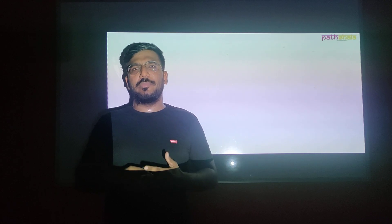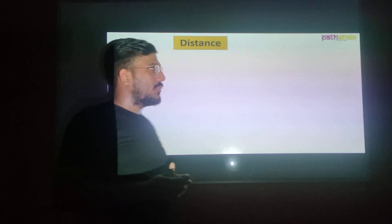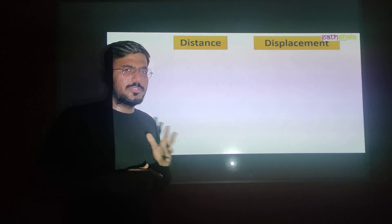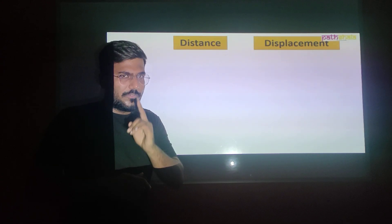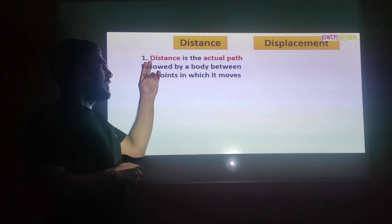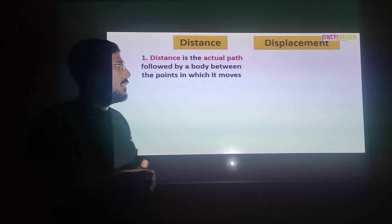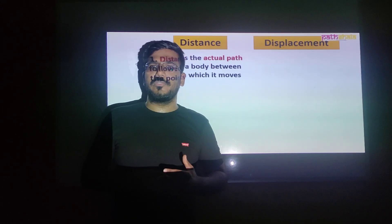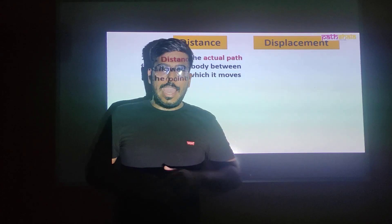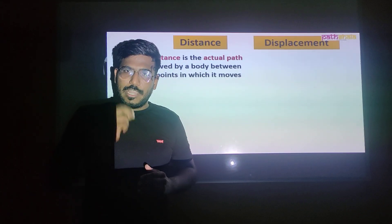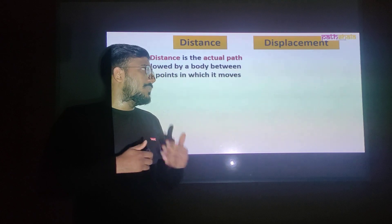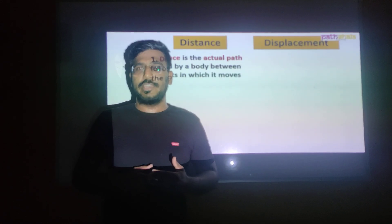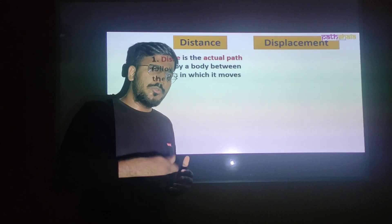Let's understand this in more detail by writing the distinguished points of distance and displacement. The first point is the definition. Distance is the actual path covered by a body between the points in which it moves — as in the examples of the ant and the athlete. What could displacement be?